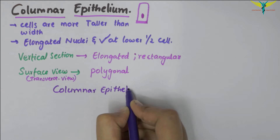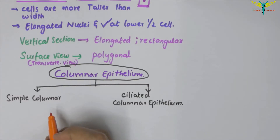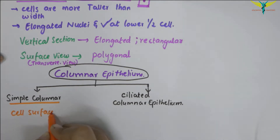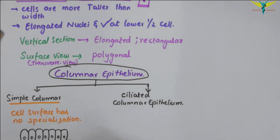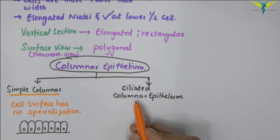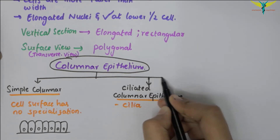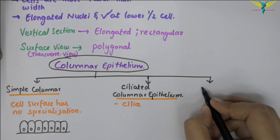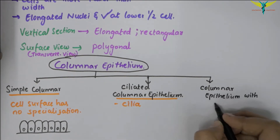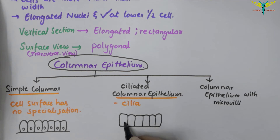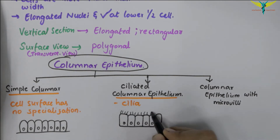The columnar epithelium is further classified according to the nature of the free surfaces of the cells. In the simple columnar epithelium, the cell surface has no particular specialization. In the ciliated columnar epithelium, the cell surface bears cilia, so it is called the ciliated columnar epithelium.